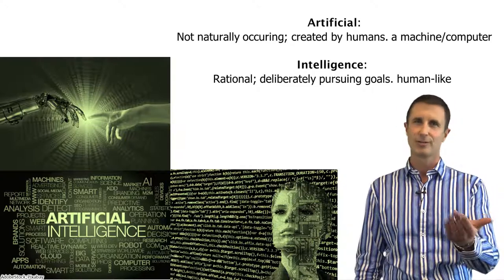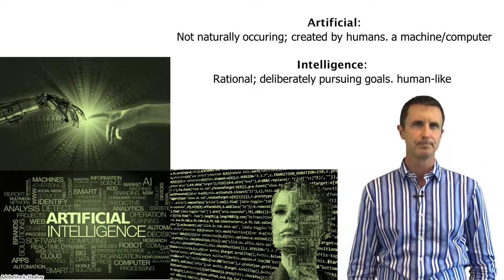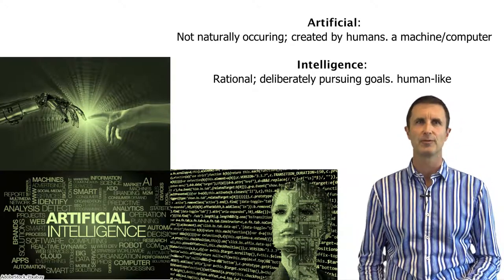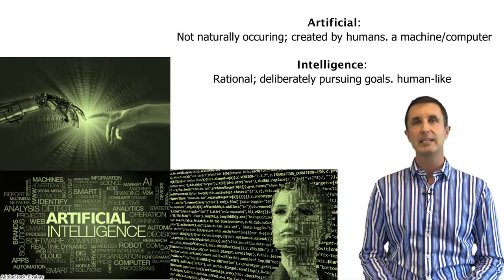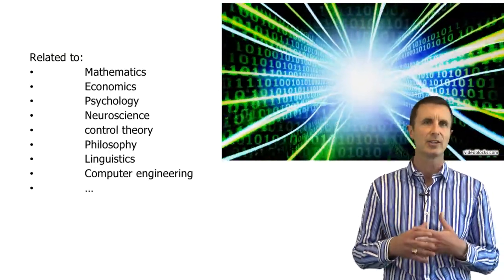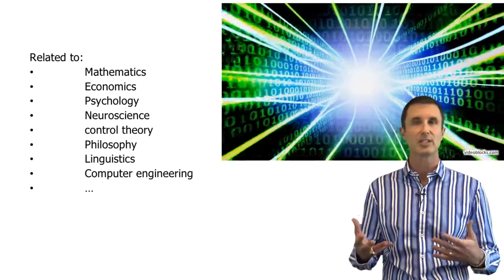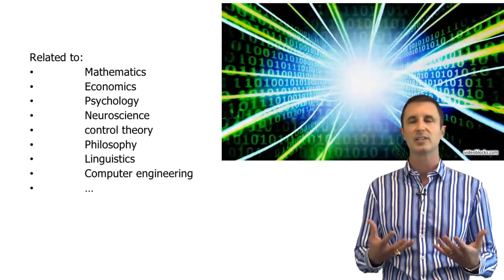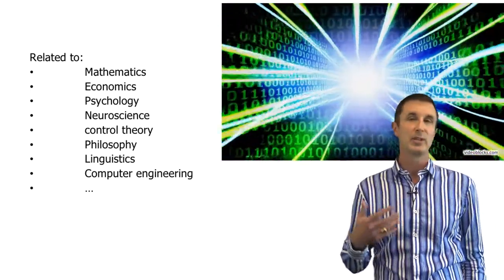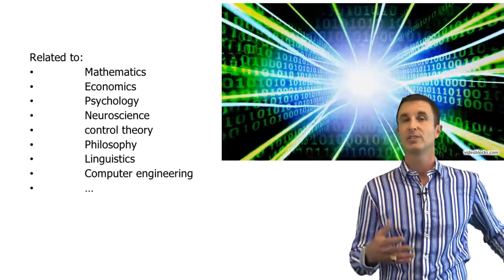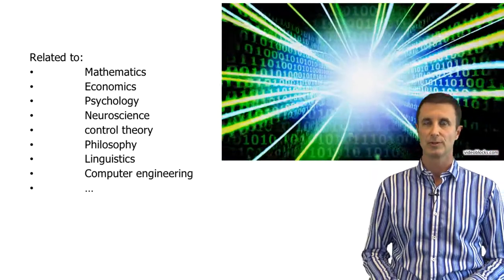Do we mean intelligence in exactly the same way humans are intelligent or do we mean something that's a little more abstract? And there isn't a clear definition there in artificial intelligence of which one we mean. It's a fairly broad field. It's related to a bunch of other fields: mathematics, economics, psychology, neuroscience, control theory, philosophy, linguistics, computer engineering. All of these things have a role to play.